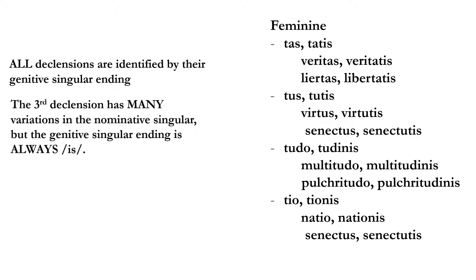Here are some common feminine endings in the third declension — the rare ones are omitted. The pattern '-tas'/'-tatis': veritas/veritatis (truth — source of English 'very,' 'verify,' 'verily'), libertas/libertatis (liberty). The pattern '-tus'/'-tutis': virtus/virtutis, senectus/senectutis. Another common pattern is '-tudo'/'-tudinis': multitudo/multitudinis, pulchritudo/pulchritudinis. And '-tio'/'-tionis': natio/nationis.